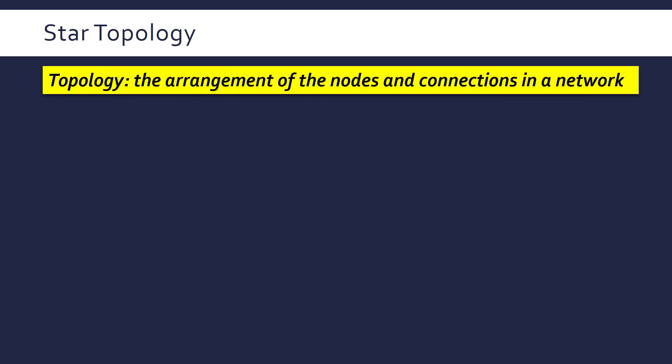We're looking at the concept of topologies, and in particular two topologies: star and bus. The term topology itself just refers to the arrangement of the nodes — so how they're organised, how they're laid out. A node is another word for a device in a network. So topology refers to the arrangement of the nodes and connections in the network, with connections being basically the wires and how these nodes are able to communicate with each other.